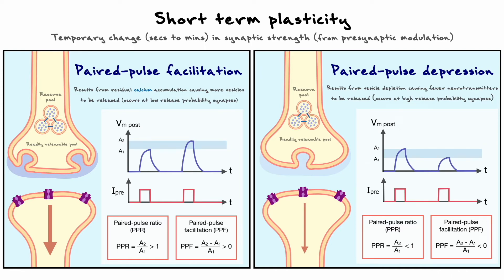For the paired pulse facilitation metric, we do the same thing, but in the numerator, we subtract the amplitude of the first response. If the value is positive, it corresponds to facilitation, and inversely, if the value is negative, it corresponds to depression.